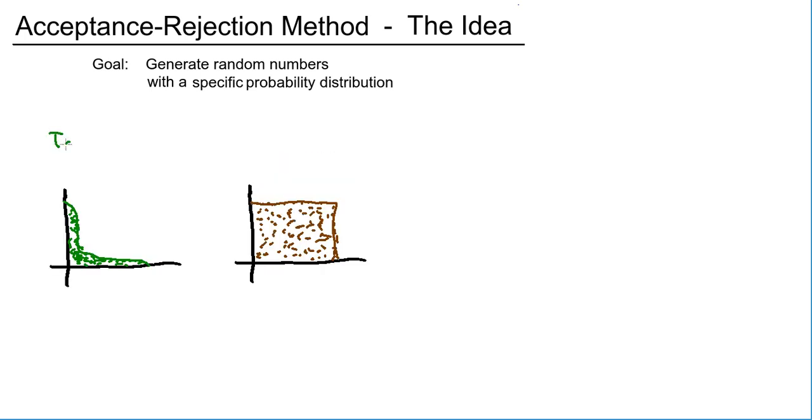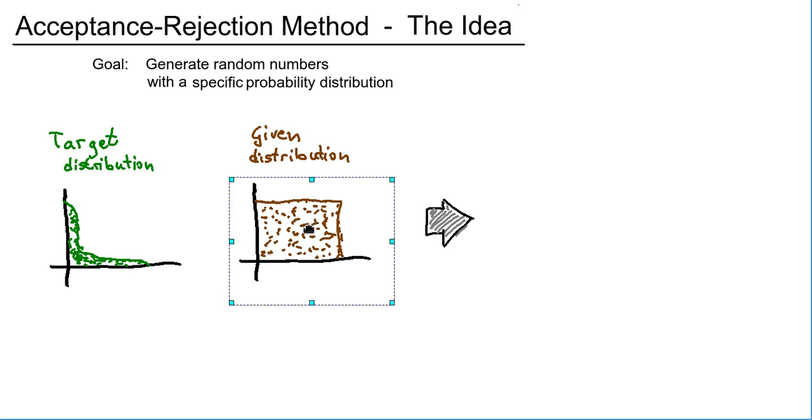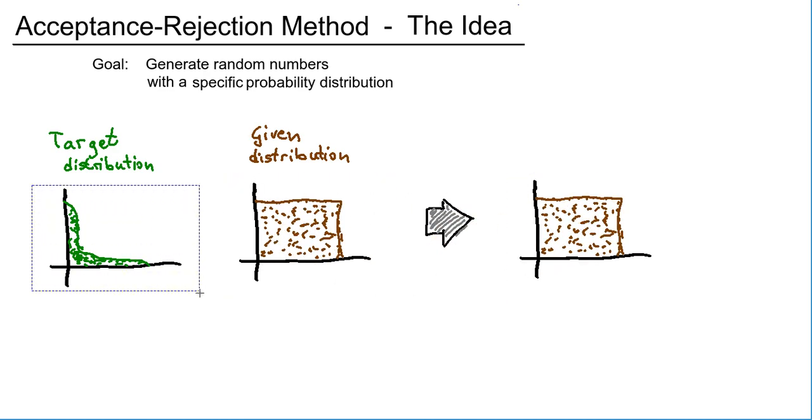So here you have your target distribution and this is your given distribution. Now the idea behind the Acceptance Rejection Method is you take your given distribution, let's do this here live, and you take your target distribution and use the target distribution like a mask.